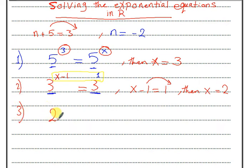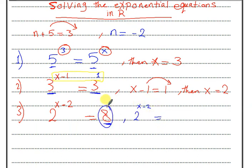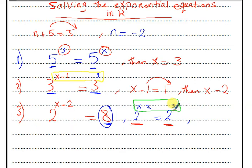Another example: if I have 2 to the power 2x minus 2 equals 8. Here I don't have the same base, but we can convert 8 as 2 to the power 3. Now I have the same base, so I have equal powers: 2x minus 2 equals 3, and x equals 5.